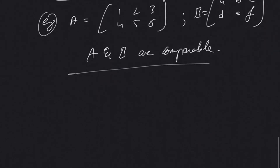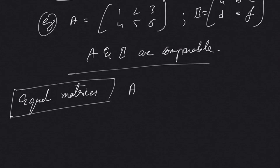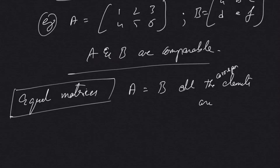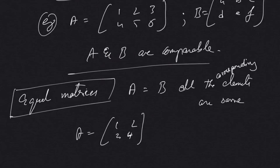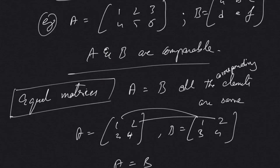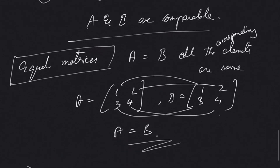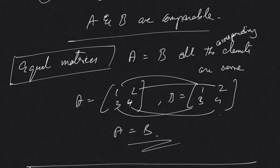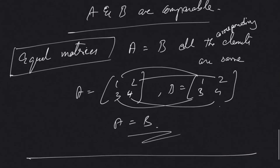Finally we have equal matrices. Two matrices are said to be equal if all corresponding elements are the same. For example, if matrix A is 1, 2, 3, 4 then it will be equal to matrix B only if B is also 1, 2, 3, 4. This is where we stop for today. In the next video we will cover how to add and subtract matrices and do more basic operations. Please comment below, share with your friends, and thank you for watching.